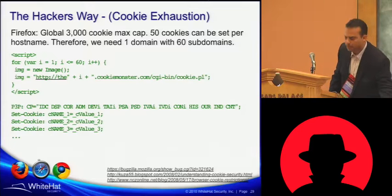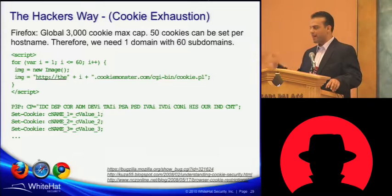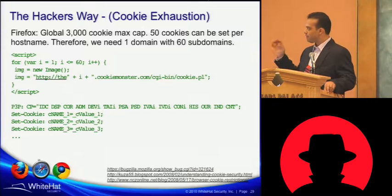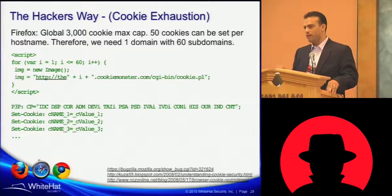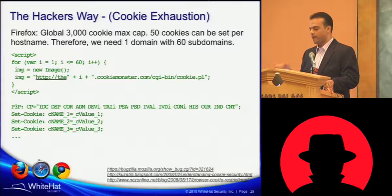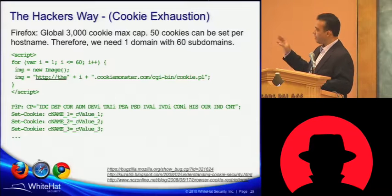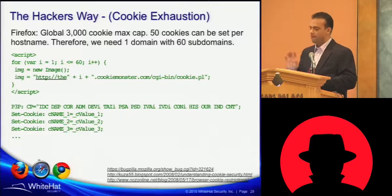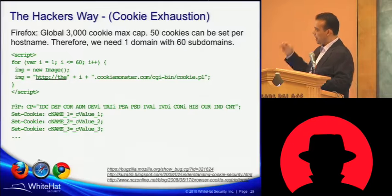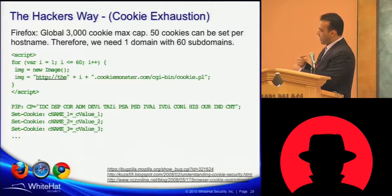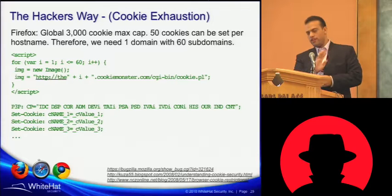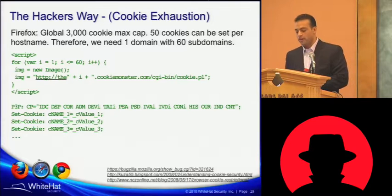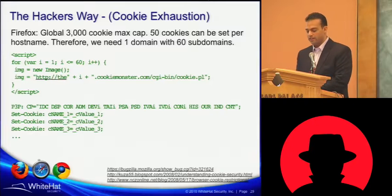You set up one domain — badguy.com — 60 subdomains: 1.badguy.com, 2.badguy.com, whatever the case may be — and you set 50 cookies per domain. That is the code to do it. It grinds the system, loads up 3,000 cookies, and all your other cookies are deleted off the system.